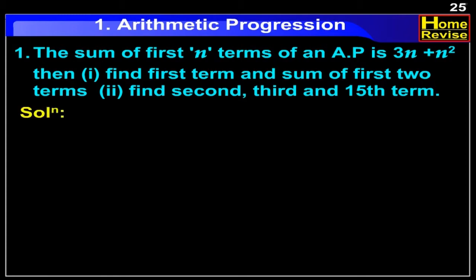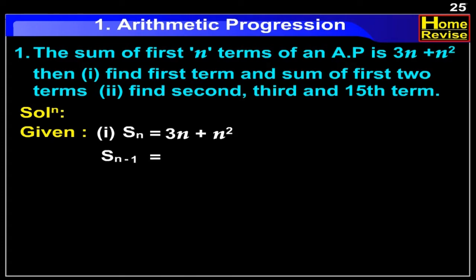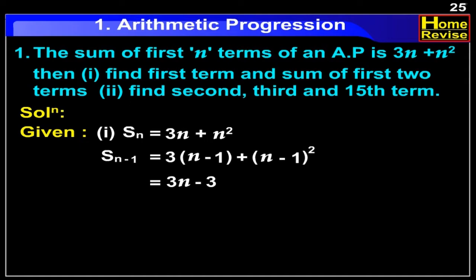Solution. It is given that Sn is equal to 3n plus n square. Therefore, Sn minus 1 will be equal to 3 into (n minus 1) plus (n minus 1) whole square, which is equal to 3n minus 3 plus n square minus 2n plus 1.